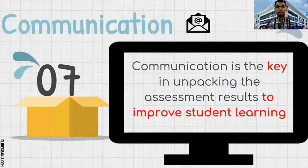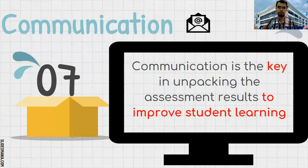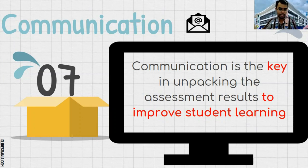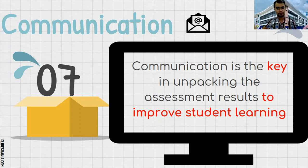Principle number seven is communication. Communication is the key to unpacking assessment results to improve student learning. The main purpose of assessment is to gather data to improve student learning. If we collect the data but do not communicate the results to learners, nothing will happen. They will not know what things they need to improve or what areas they are good at. We could not achieve the goal of assessment to help them improve. We are not giving assessment to fail or punish students, but to help them discover what they have learned and what they still need to learn.